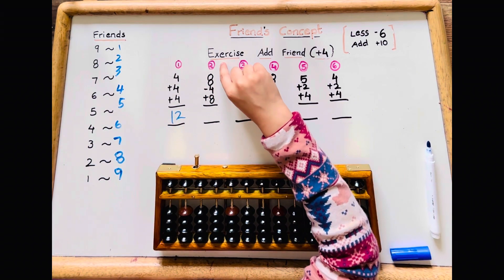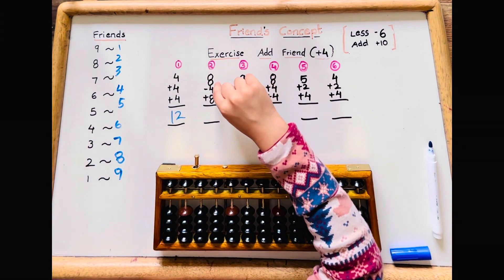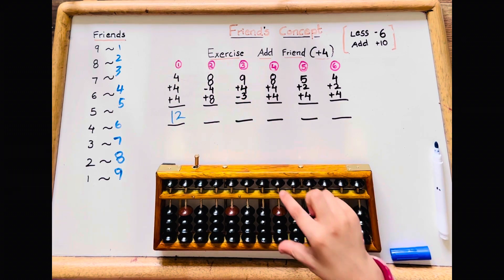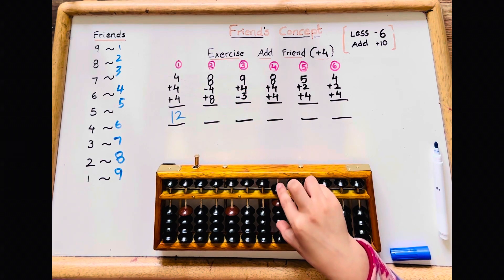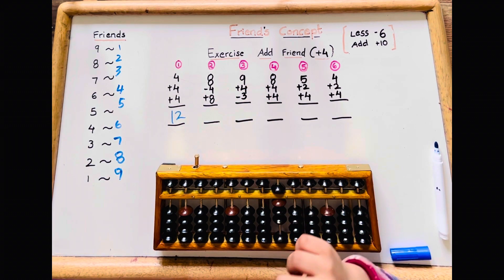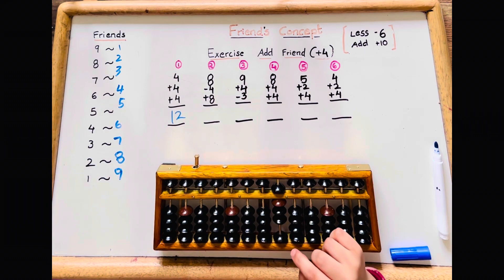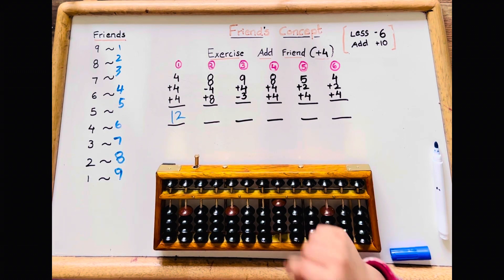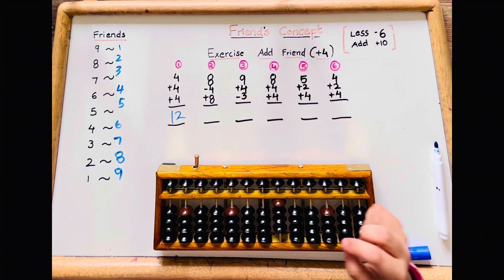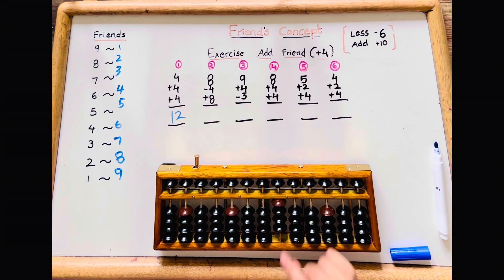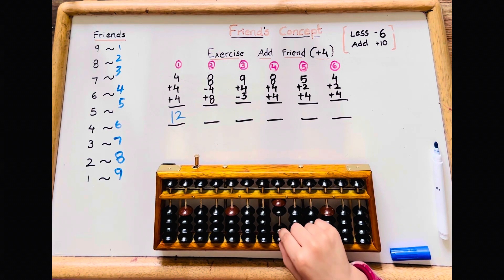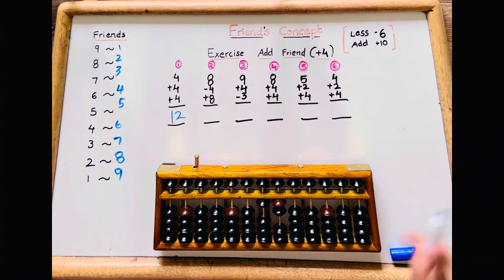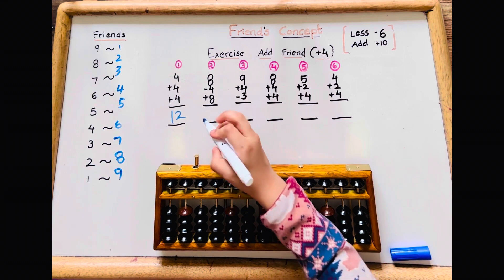Let's do the second sum: 8 minus 4 add 8. 8 minus 4 — there's no minus 4, so add 1 minus 5. Add 8 — there's no add 8, so minus 2 add 10. The answer is 12.